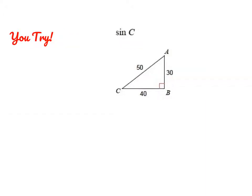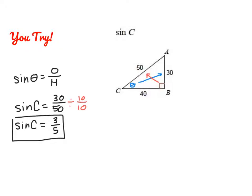Go ahead and pause the video to find the sine of angle C. The ratio for sine is always opposite over hypotenuse. Looking across from angle C, AB is the opposite side. The hypotenuse is always across from the right angle. So we have 30 over 50, which simplifies to 3 over 5.